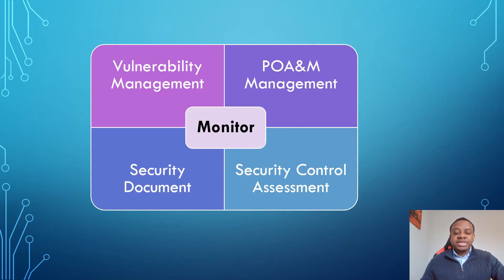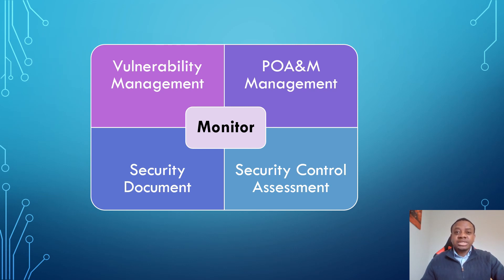Some of the activities involved in the monitor step of the NIST risk management framework include vulnerability management. Vulnerability management involves conducting vulnerability scans on the system, which is a RA-5 control, and remediation actions are conducted for any identified vulnerability.